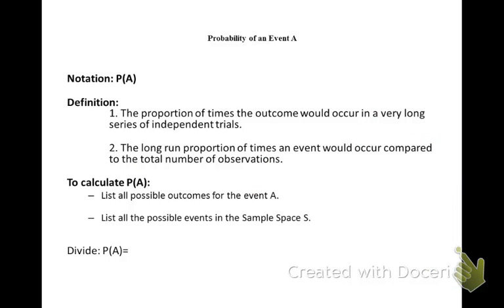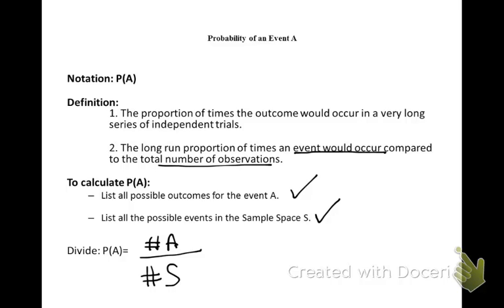To calculate the probability of an event, we denote it as P of A, where A is the name of the event. It's the long-run proportion of times an event would occur compared to the total number of observations. To find the probability of event A, list all possible outcomes in A — the number in A — compared to the total number of observations, the possible events in the sample space. This is your formula that you'll use to calculate probabilities.